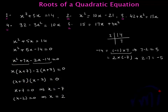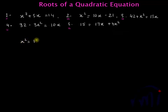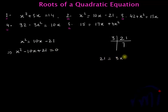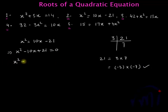Now the second problem: x squared equals 10x minus 21. This can be written as x squared minus 10x plus 21 is equal to 0. So 21 can be written as either 3 multiplied by 7, or as minus 3 multiplied by minus 7. Adding minus 3 and minus 7 gives minus 10, which matches the coefficient of x. So I'll take this pair of factors, giving x squared minus 7x minus 3x plus 21 equals 0.